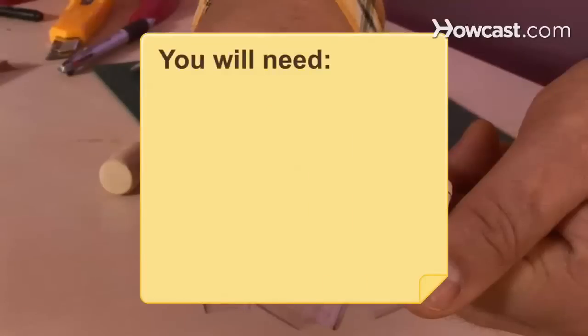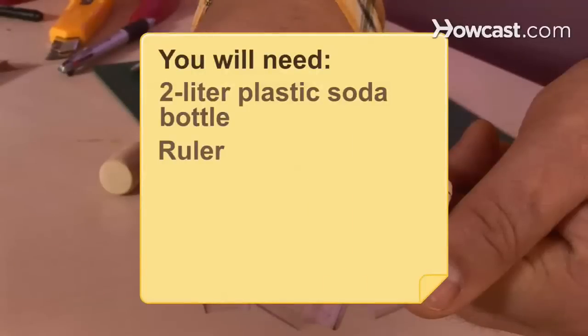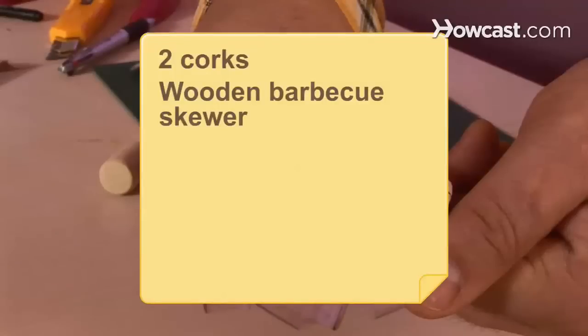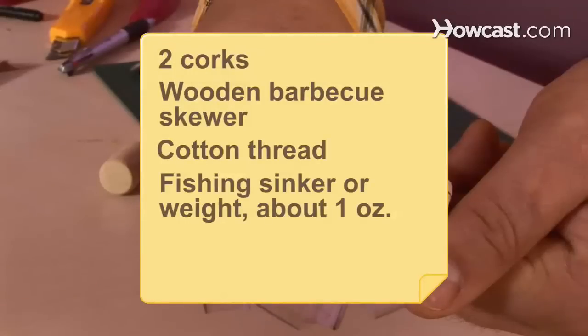You will need: 2-liter plastic soda bottle, metric ruler, marker, craft knife, scissors, 2 corks, wooden barbecue skewer, cotton thread, fishing sinker or other weight (1 oz), and a sink.